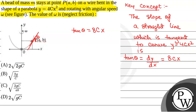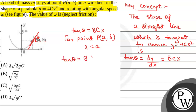Now, for point P, the x-coordinate will be equal to A, so tan θ will be equal to 8CA.